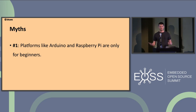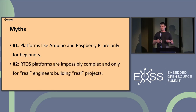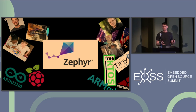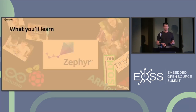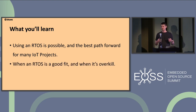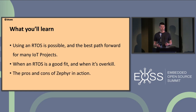The first myth is that platforms like Arduino and Raspberry Pi aren't only for beginners — you actually can use them to build real, serious things in certain situations. More importantly, it's a myth that RTOS platforms are impossibly complex and only for serious professionals. What's really helped change this is Zephyr, which occupies an interesting middle ground: more approachable for people getting started, yet capable of building complex real-world applications. What we hope you take away is more confidence that using Zephyr is possible, along with guidance on when an RTOS is a good fit and when it's overkill.